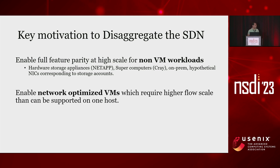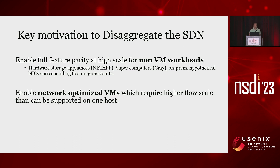The second key motivator was we wanted to enable network-optimized virtual machines which can go beyond the capabilities we have on a single host. Today in host networking, if you have a host capable of pumping 10 million flows, the best VM you can create can do the same — it cannot go beyond that. This gets worse when you have multiple VMs on the same host because you need to partition that flow table, leading to artificial limits where people are forced to buy more cores just because they need more flows.